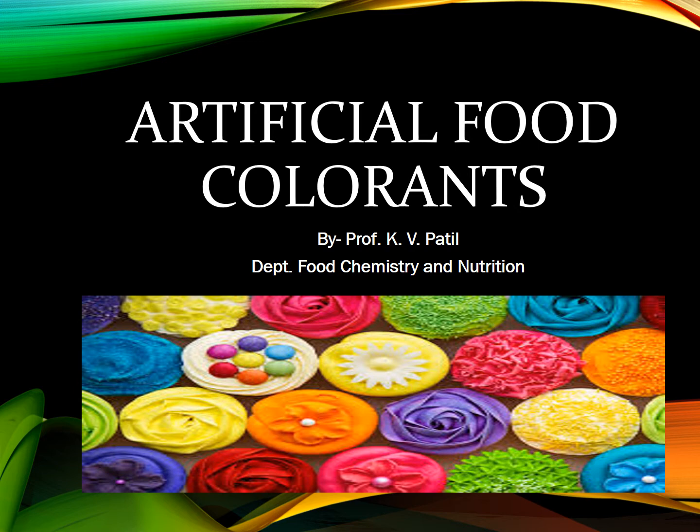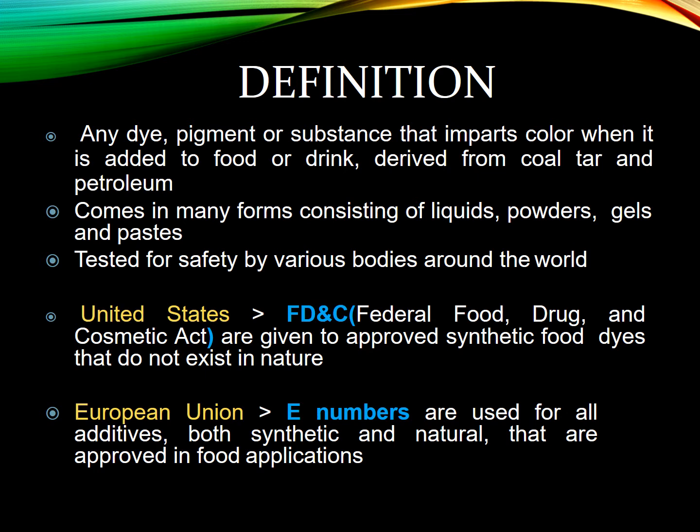Welcome. Today's topic is artificial food colorants. Let us understand what artificial colors are. Any dye, any pigment, or any chemical compound which imparts color when added to your food or drink, and which is derived from coal tar and petroleum — unlike natural colorants which are obtained from various fruits and flowers — is considered an artificial color.